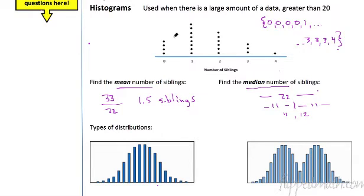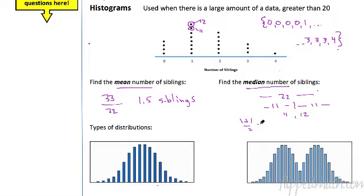The way I look through the dot plot is I just start counting up: 0, 0, 0, 0, then 1, 1, 1, 1, 1, 1, 1, 1. If you count them all up, that's the 12th one and this one is the 11th one. When I add them together: 1 plus 1 divided by 2 — 1 plus 1 is 2, 2 divided by 2 is 1. So the median number of siblings is one sibling.